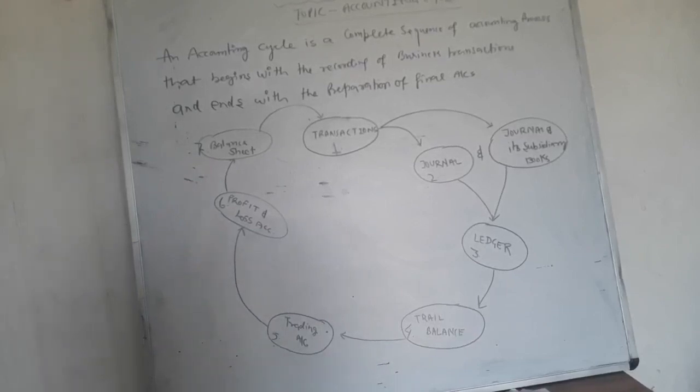Then we have to go for the sixth step. This is known as trading profit and loss accounts. Here we get the result of net profit and net loss.